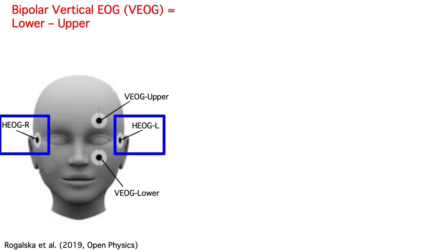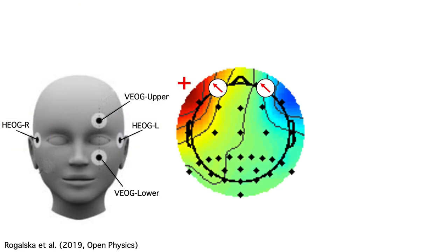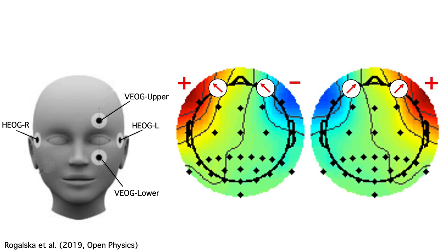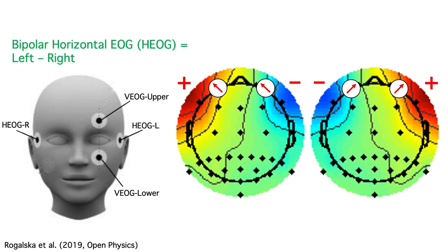To look at horizontal eye movements, we place horizontal EOG electrodes just lateral to each eye. When the eyes move leftward, we get a positive voltage over the left side of the head and a negative voltage over the right side of the head. And when the eyes move rightward, we get a positive voltage over the right side and a negative voltage over the left side. If we make a bipolar HEOG signal by taking HEOG left minus HEOG right, we again get a doubling of the signal and we eliminate most brain activity.